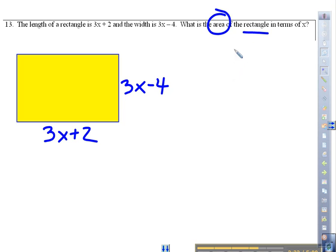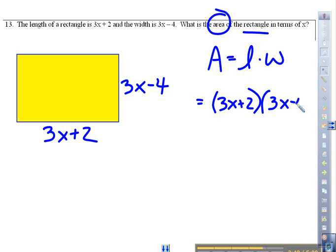How do you get the area of a rectangle? Length times width. Okay, let's do that. My length is 3x plus 2. My width is 3x minus 4.